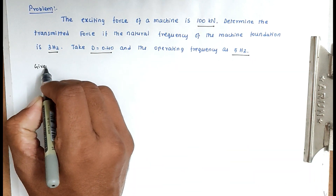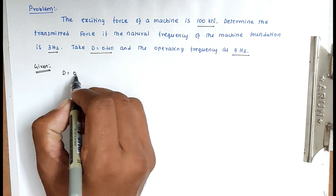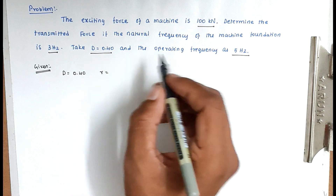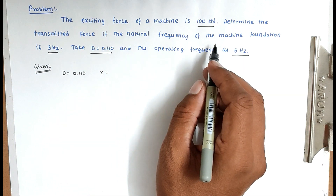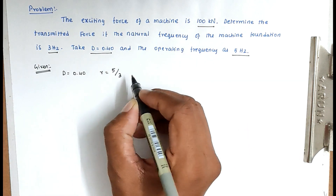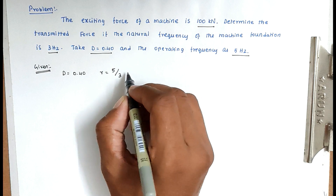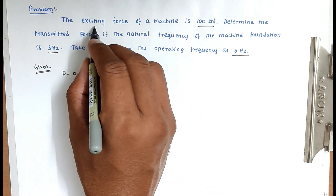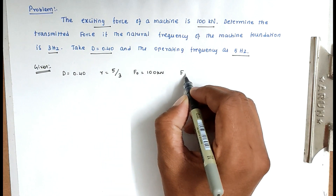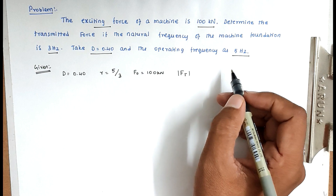The given values are: d equal to 0.40, r equal to operating frequency divided by natural frequency, so r equal to 5 divided by 3. F₀, the exciting force, is given as 100 kilonewton. These are all the given values. We have to find out Ft, the transmitted force from the machine foundation.